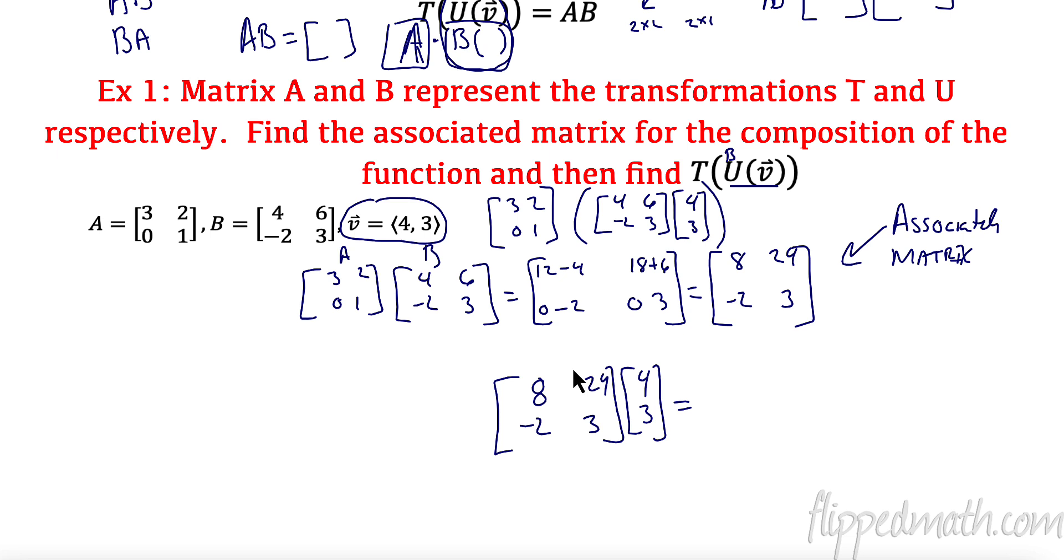I'm going to multiply. I got 8 times 4 is 32. 24 times 4 is 96. Negative 2 times 4 is negative 8. 3 times 3 is 9. So in the end, we have, I believe, 128 and 1. So our vector, our transformed vector, went from 4, 3, and we did a composition of transformations, and we ended with 128 and 1.